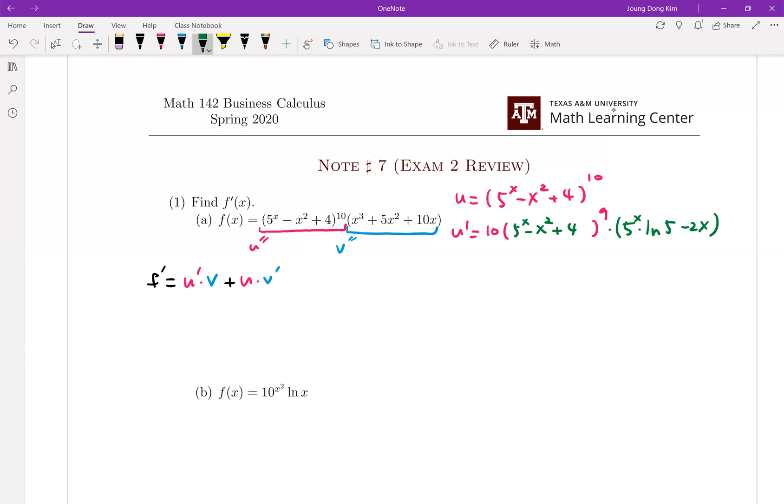That's u'. Now we need v, which is x³ + 5x² + 10x, a polynomial. Then v' is easy: 3x² + 10x + 10. Okay, now we are ready - all four pieces found.